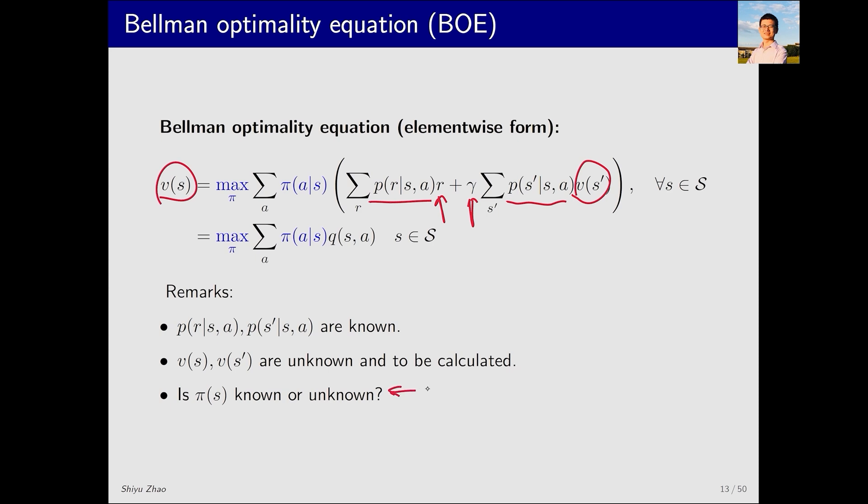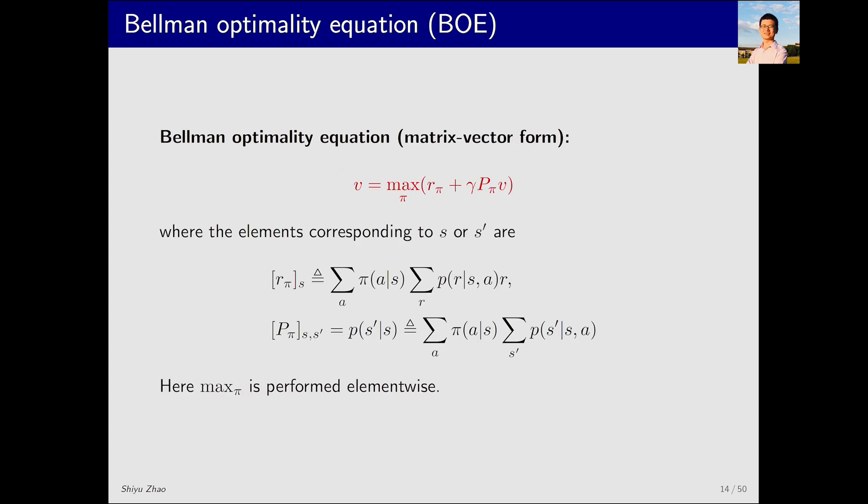Is π known or unknown here? In the Bellman equation, the policy is given beforehand. However, in the Bellman optimality equation, π is not given. We must solve it.